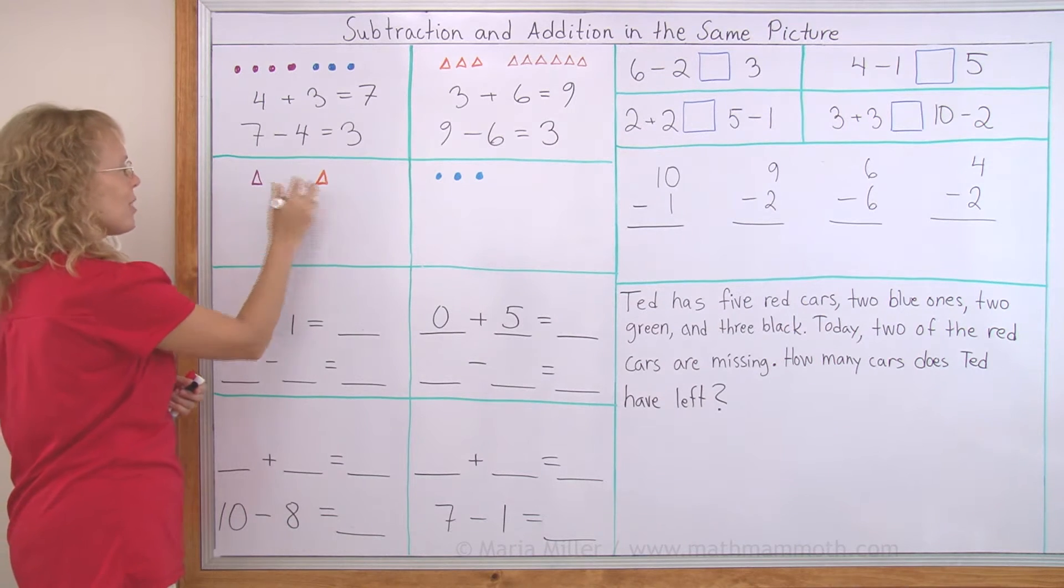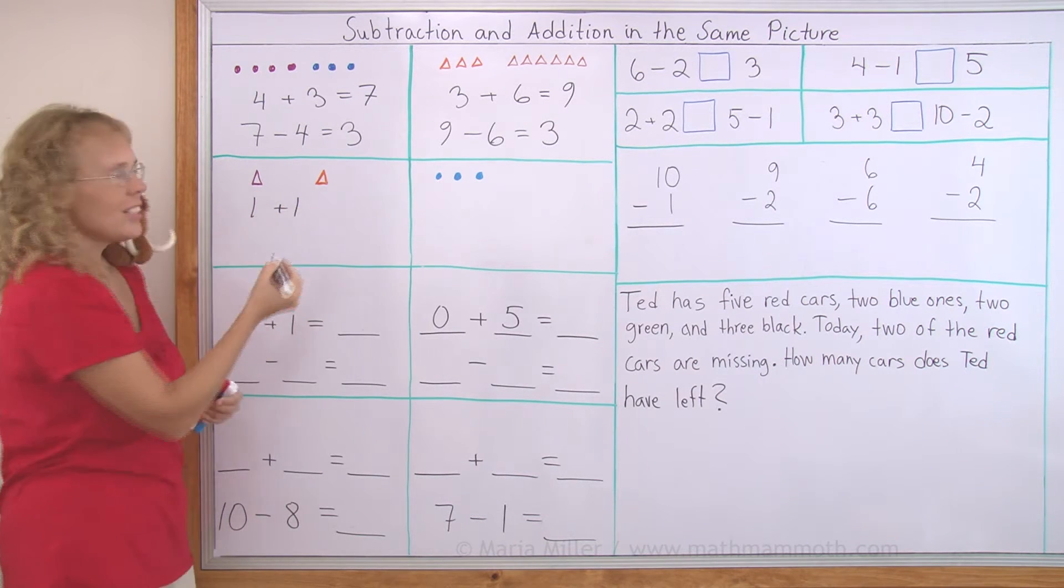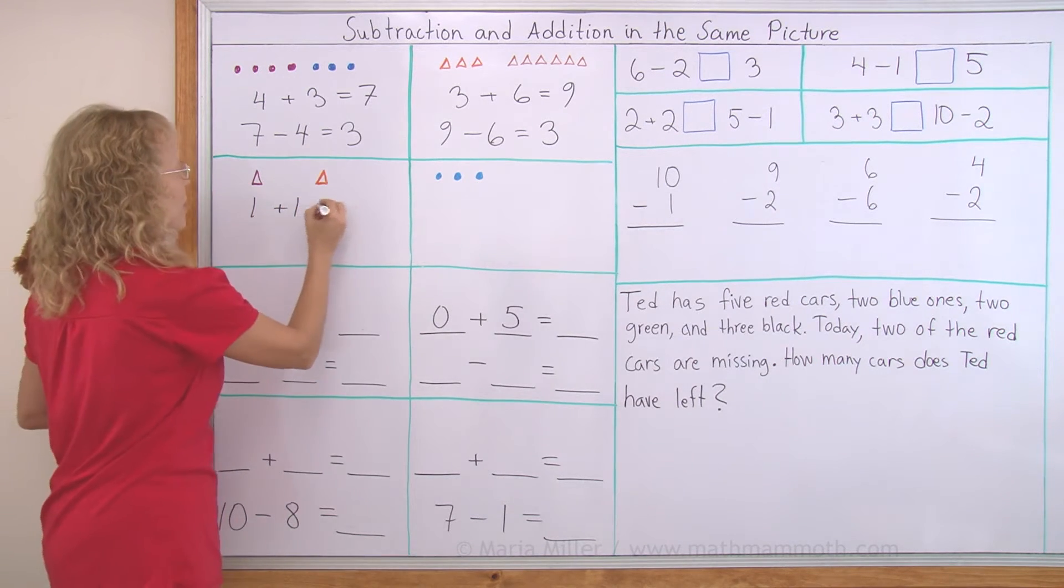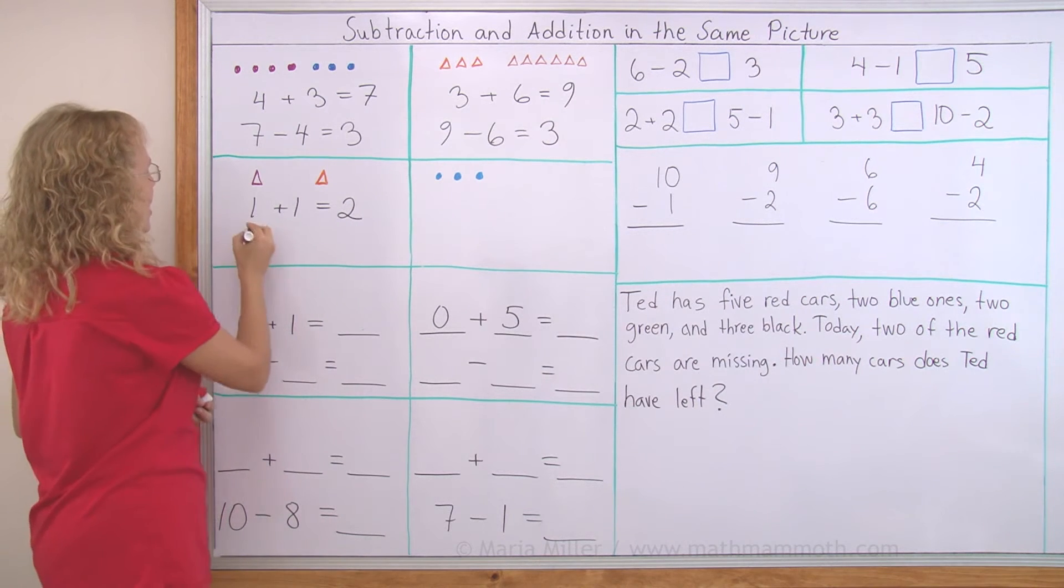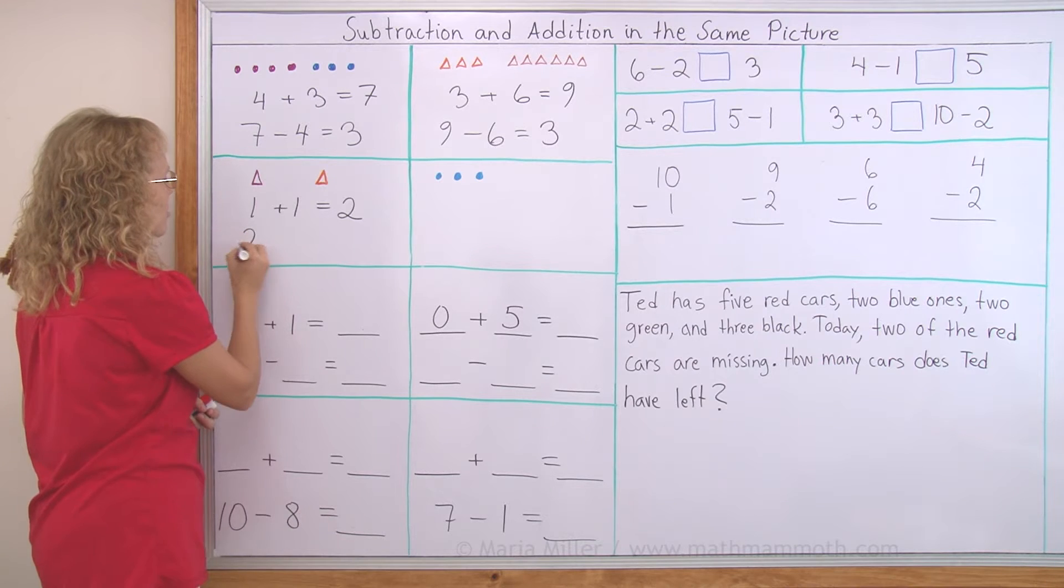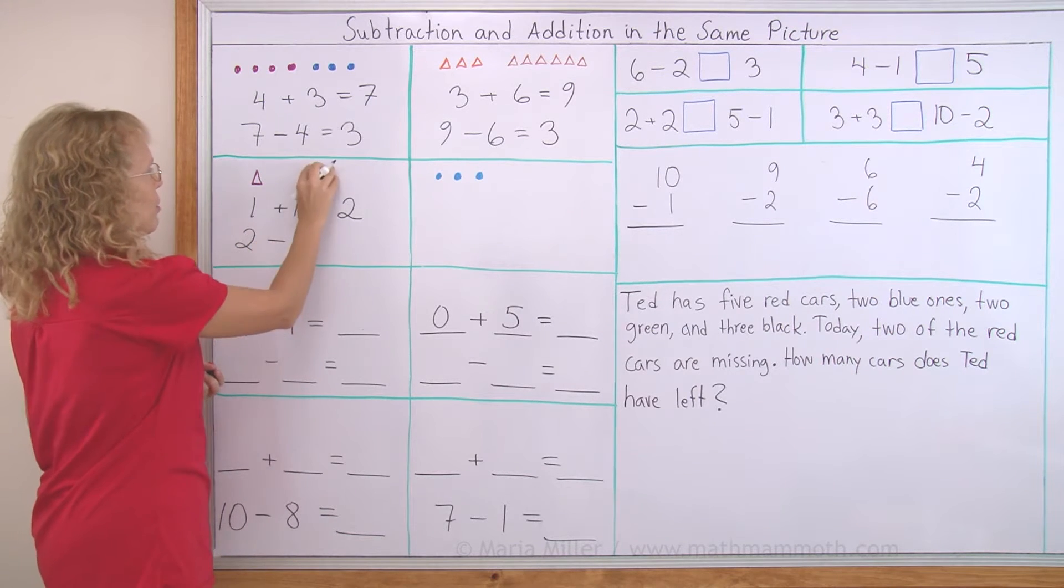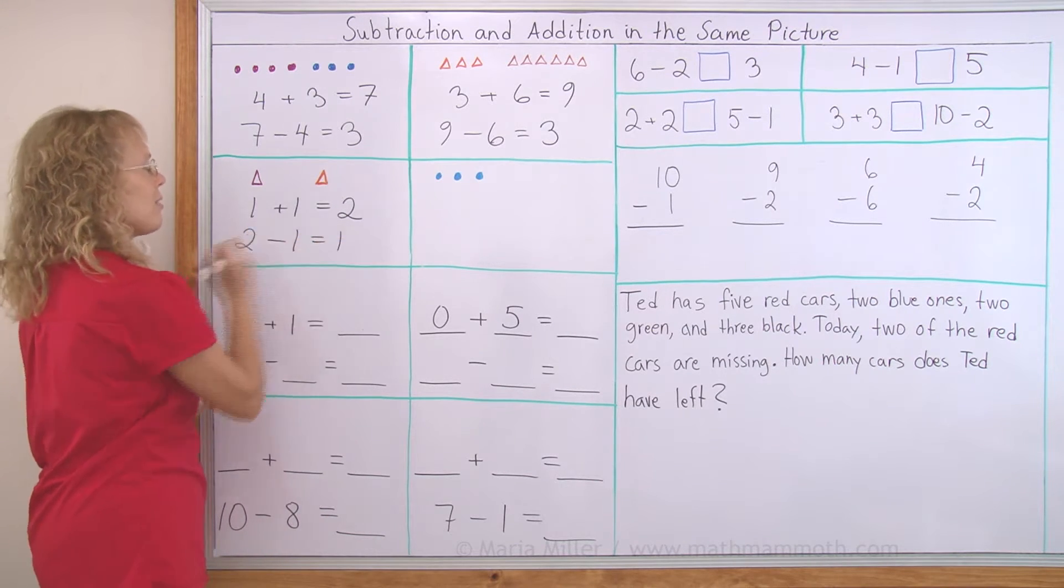Now here I have 1 + 1, right? Oh, that's the easiest addition problem there is. 1 + 1 = 2. And the subtraction would start with two. We have two in the beginning. And then this one goes away. And one is left.